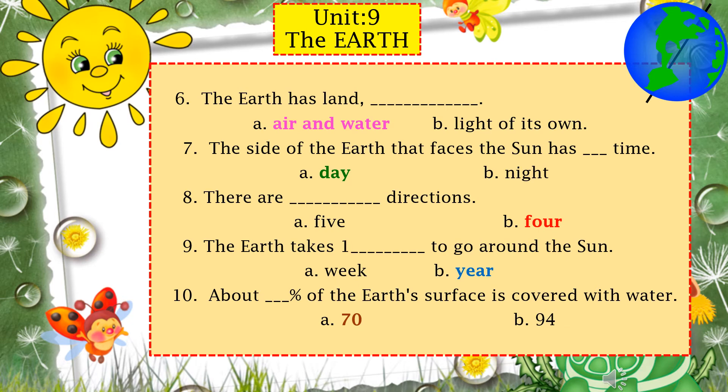Number eight: there are dash directions. How many directions are there? Yes, there are four directions — east, west, north, and south. The sun rises in the east and the sun sets in the west. So there are four directions: east, west, north, and south.